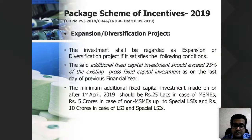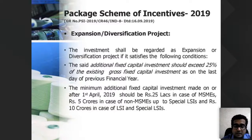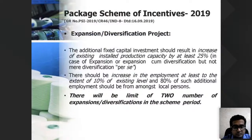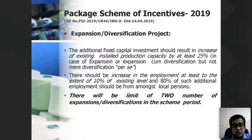For expansion to qualify, there must be a 25% increase in gross fixed capital investment, minimum investment of 25 lakhs for MSMEs, 5 crore for non-MSMEs, and 10 crore for large-scale industries. There should be at least 10% increase in employment over the existing level. Only two expansions are permitted under the new PSI scheme — earlier it was unlimited, but now it has been limited to two.